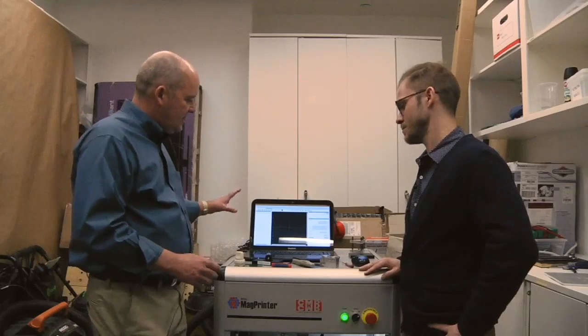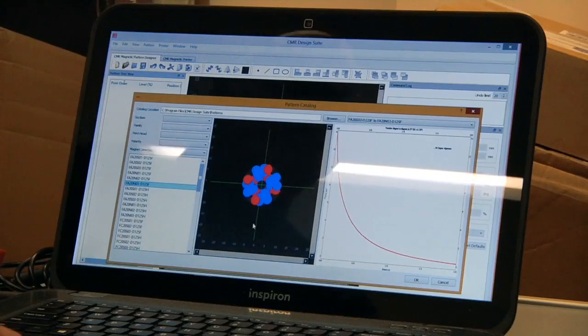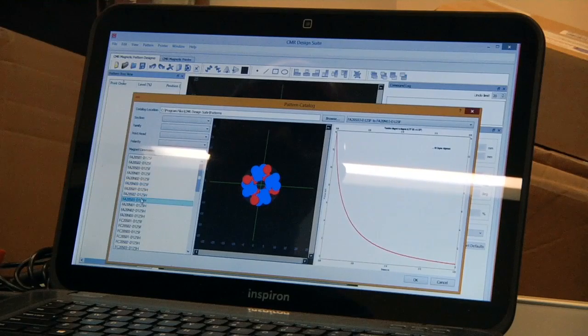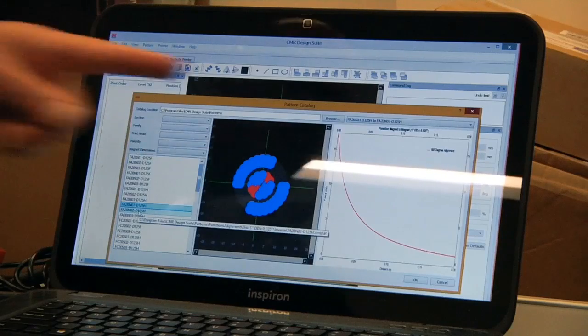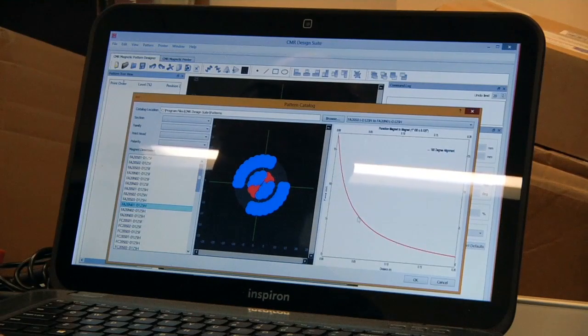What we've got with this software environment is a catalog of pre-engineered devices. If you need devices that are magnets that align at 120 degrees or 180 or every 90 degrees, you can pull it right out of the library and print those magnets in a matter of seconds.